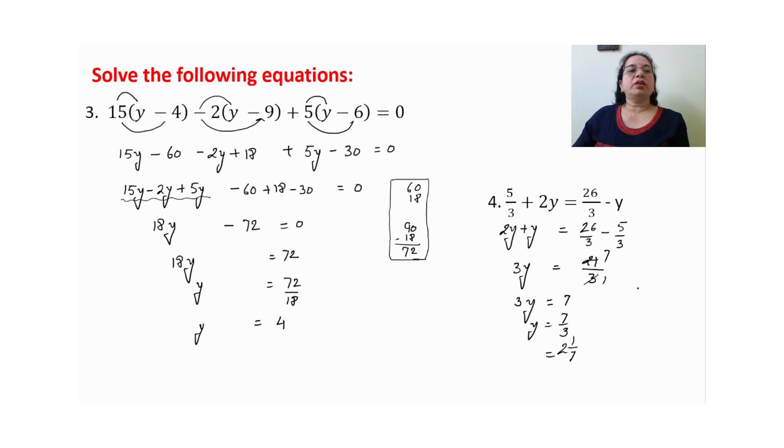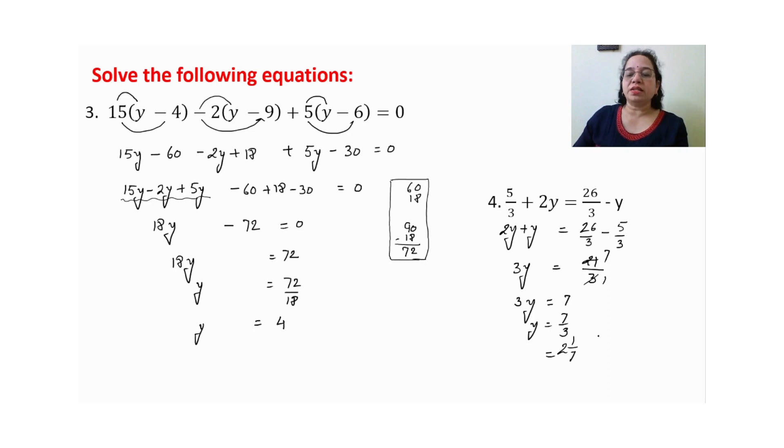3y is equal to 7, so y is equal to 7 upon 3. Convert to mixed fraction: 3 twos are 6, remainder 1 — so value of y is 2 and 1/7. Fraction rational number को mixed fraction में convert करना ज़रूरी होता है।